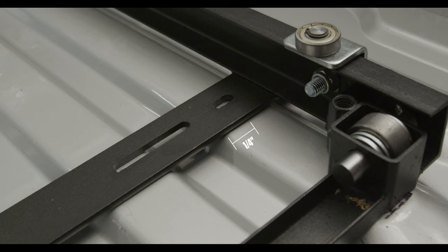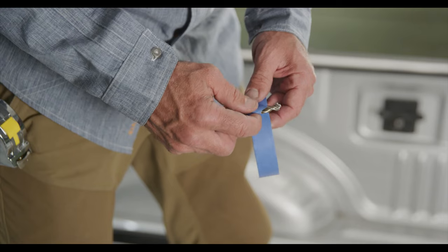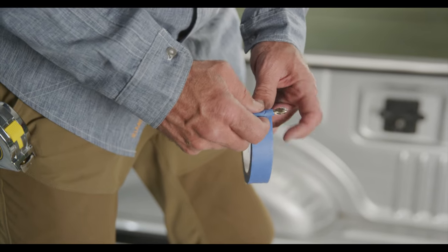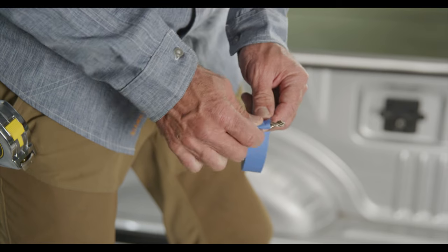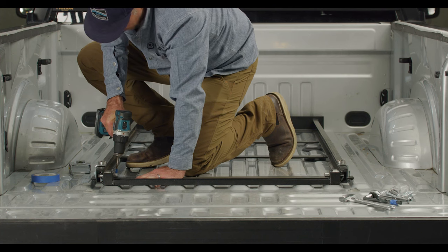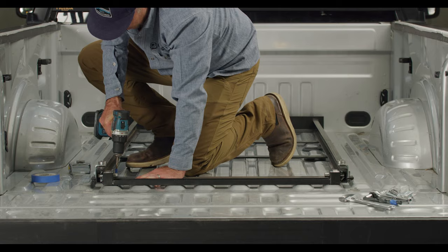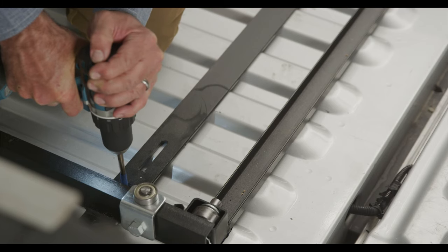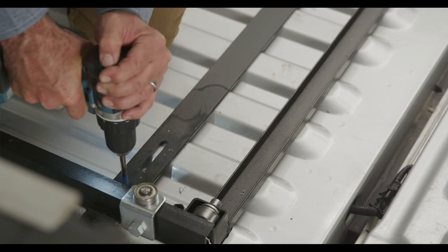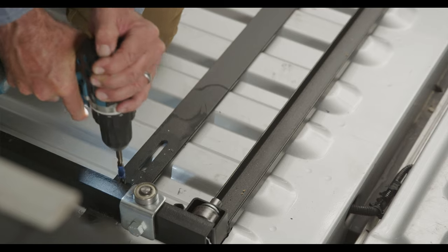Next, grab your 5/16th drill bit and either a drill stop or some tape to remind you to only drill through the first layer of metal and not your fuel line or other valuable undercarriage member. Mark and drill your pilot holes following your specific model's written instructions. As you drill your holes, drop a bolt into the pilot holes to keep the mounting frame in place.